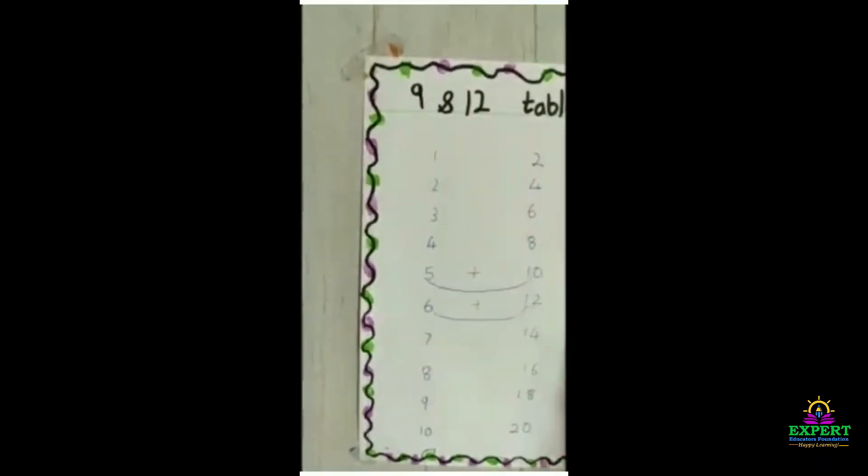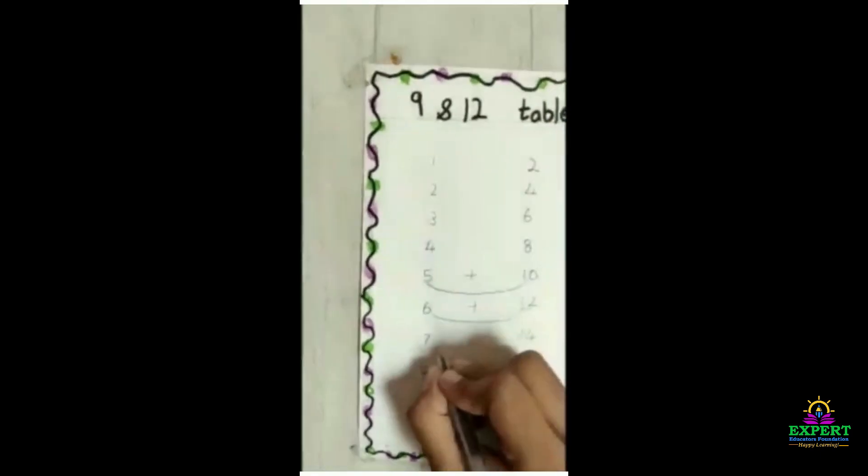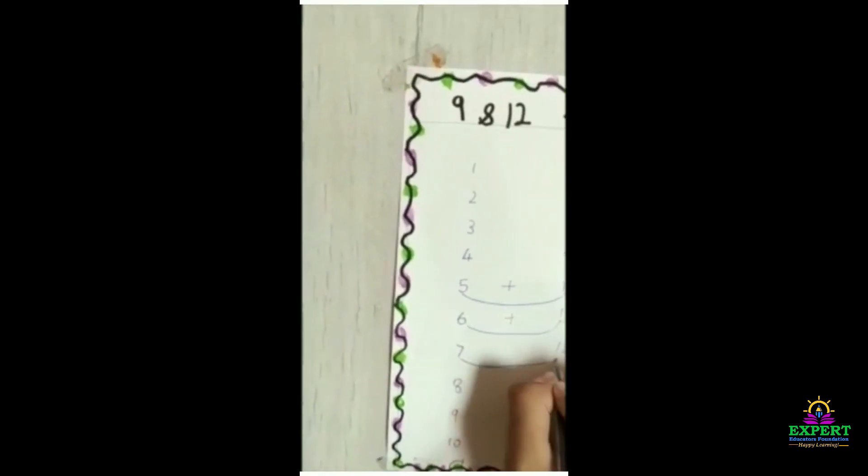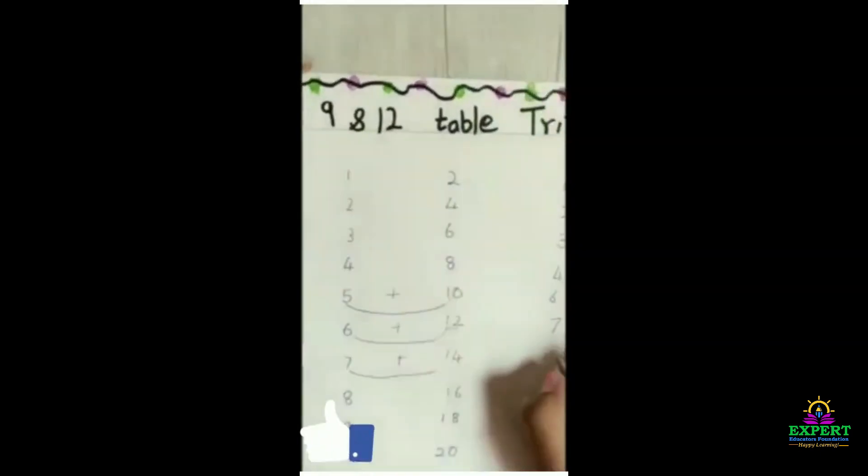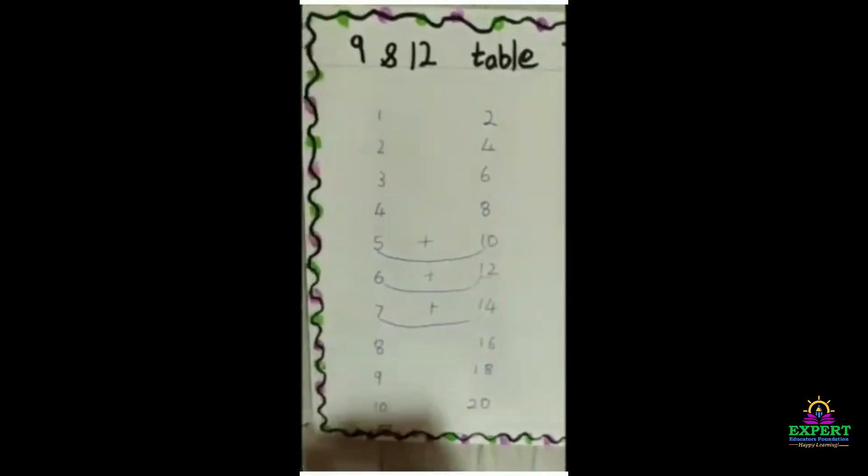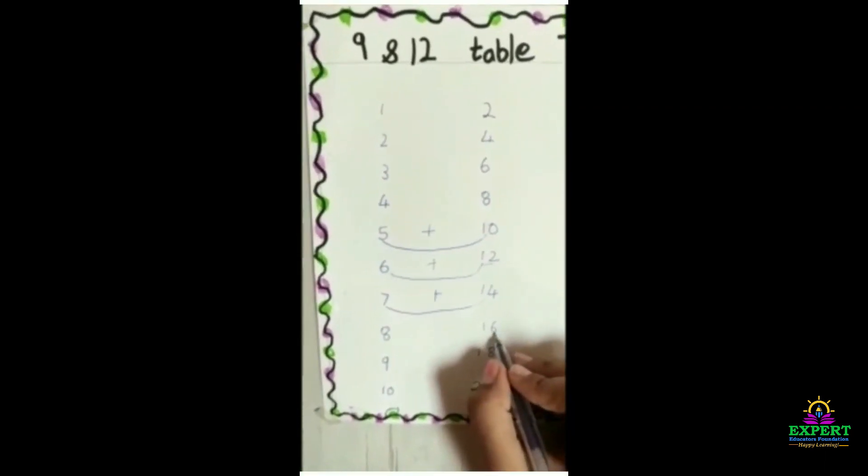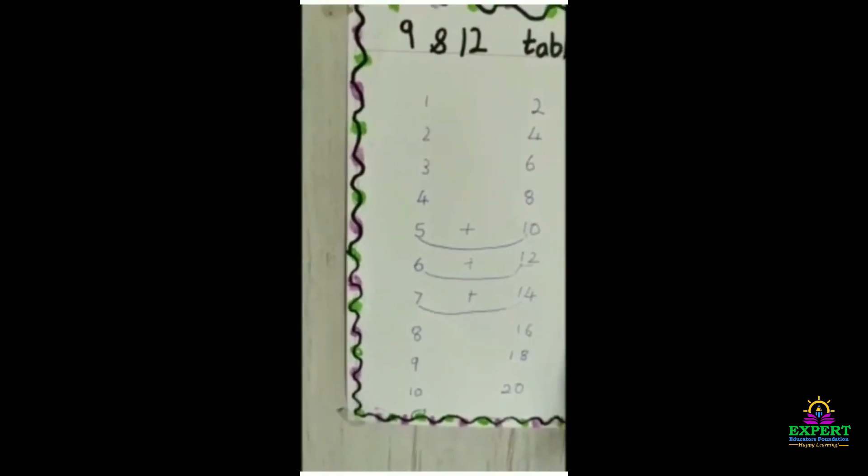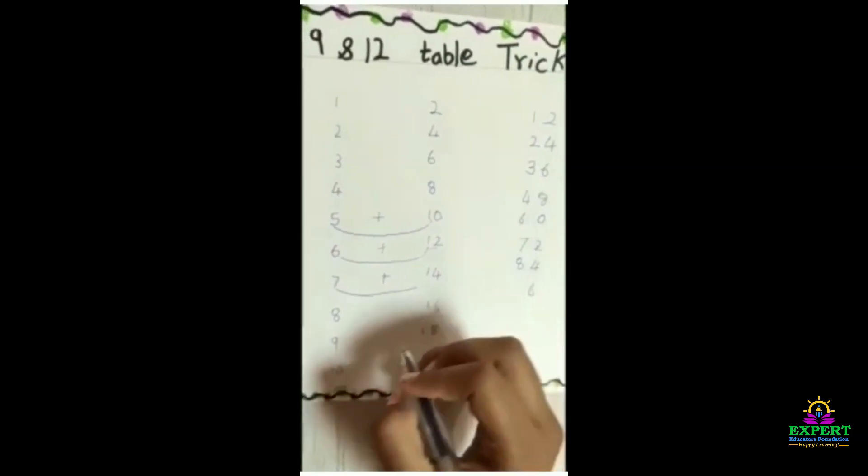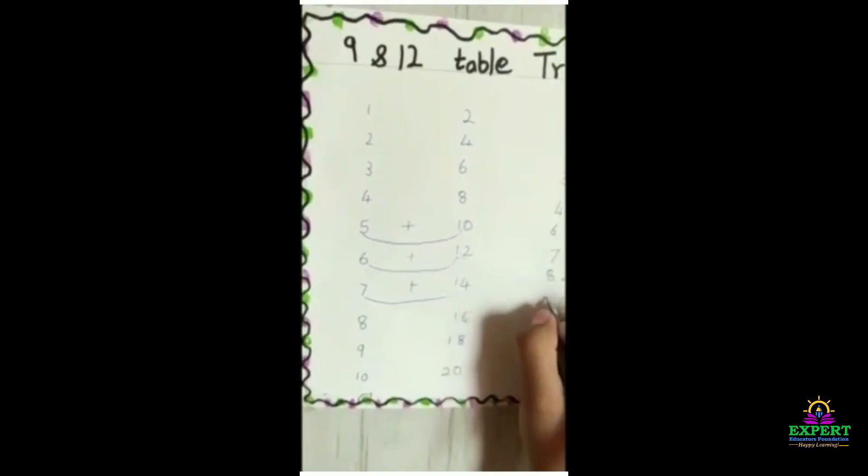The last digit is 4. We write 4 over here. And 7 plus 1 is 8. The answer is 84. Now the last digit is 6. We write 6 over here. 8 plus 1 is 96.